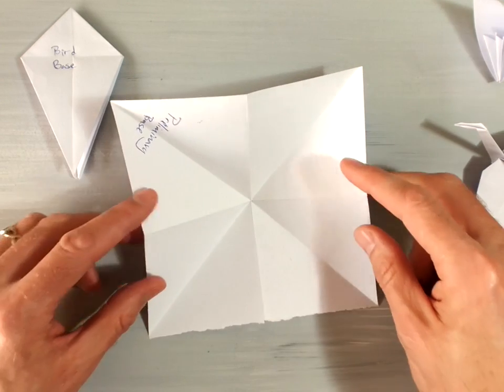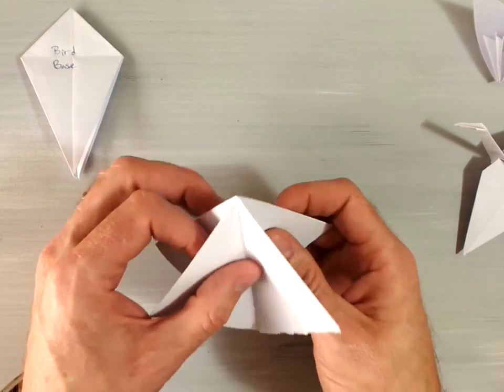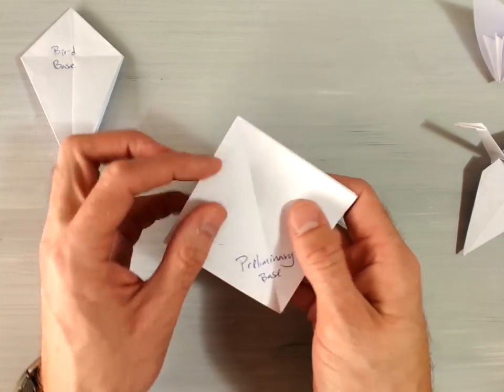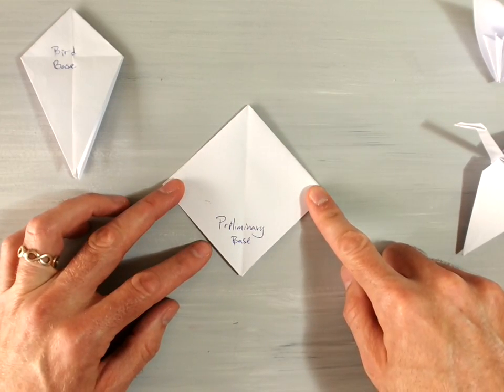Good. Now that you've discussed that, I'll just show you that if you flip this around, it creates one of the other bases of origami called the preliminary base.